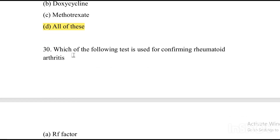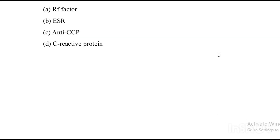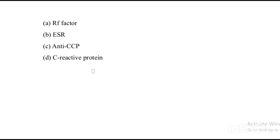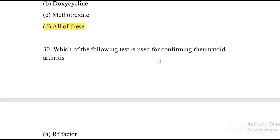Next question: Which of the following test is used for confirming rheumatoid arthritis? Option A: RF factor. Option B: ESR. Option C: anti-CCP. Option D: C-reactive protein. The answer is Option C — anti-CCP is the confirming test for rheumatoid arthritis.